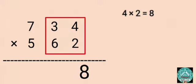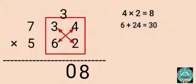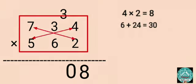Step 2: Multiply 3 by 2 and 6 by 4, then add: 6 plus 24 equals 30. Write 0 before 8 and carry forward 3.